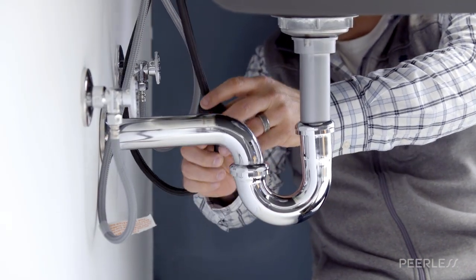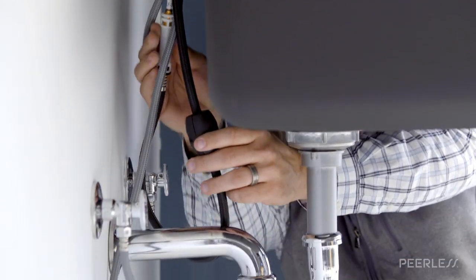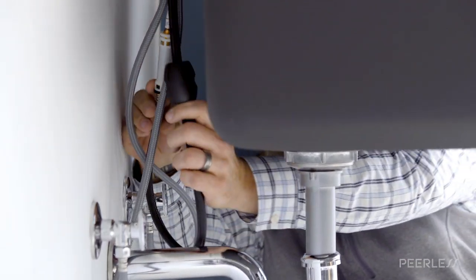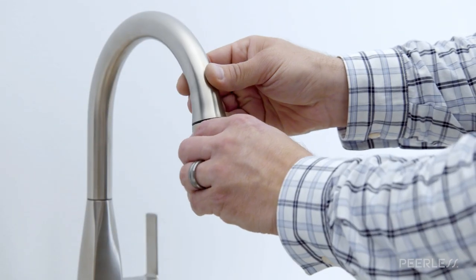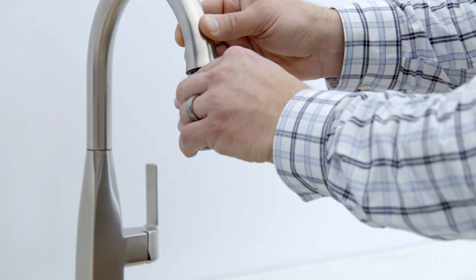Adjust the hose weight for easier hose return and make sure the copper inlet tubes do not interfere with the spray hose assembly. The hose assembly should pull freely through the spout hub.